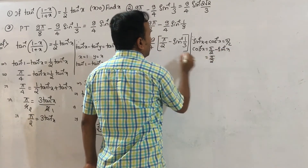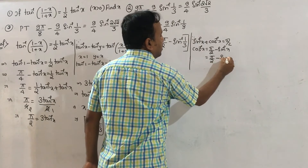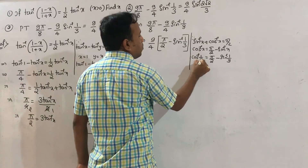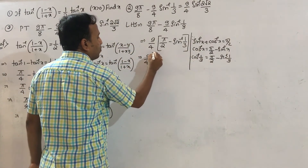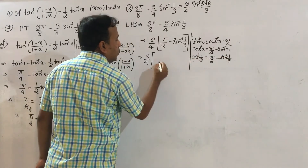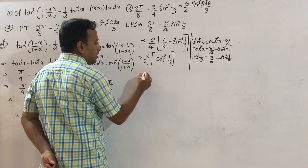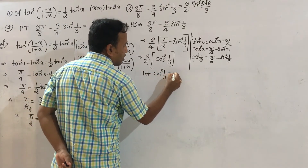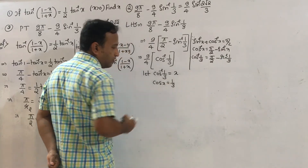So pi by 2 minus sin inverse (1 by 3) means cos inverse of (1 by 3). Therefore 9 by 4 times (pi by 2 minus sin inverse 1 by 3) equals 9 by 4 cos inverse (1 by 3). Now let cos inverse (1 by 3) equal to x, so cos x equals 1 by 3.